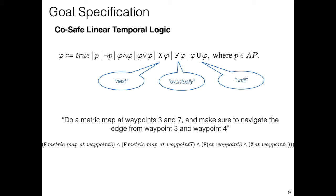We can also specify conjunctions of tasks. For example, execute a metric map at waypoint 3 and at waypoint 7 and make sure to navigate the edge between waypoints 3 and 4 can be specified as eventually metric map at waypoint 3 and eventually metric map at waypoint 7 and eventually at waypoint 3 and in the next state at waypoint 4.